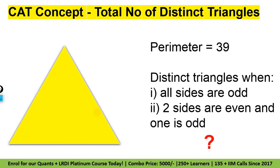Mock mein, CAT mein aa sakta hai aram se. Toh ek important cheez hai. Pahle toh yeh derivation se discuss karayenge ki kaise hota hai. Then I will be telling you direct trick. Woh trick kaafi kaam aane wali hai guys. Uske koi bhi question aaye, toh aram se hoga. 5 se 10 second mein max lagenge.